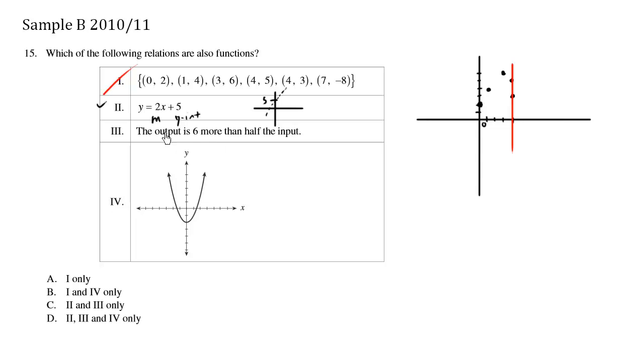Now this is a word problem. The output is 6 more than half the input. Now the word output, when talking about functions, you can think of it as your y-value. So the y-value is 6 more than half the input. So the input is x, half the input is 1 half x. The output is 6 more than, 6 more than half the input is going to be plus 6. Because this is half the input, and plus 6 is 6 more than half the input.